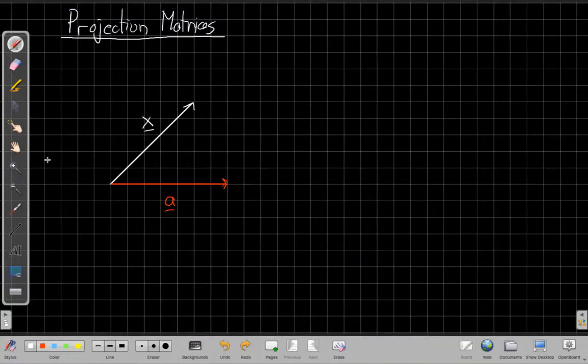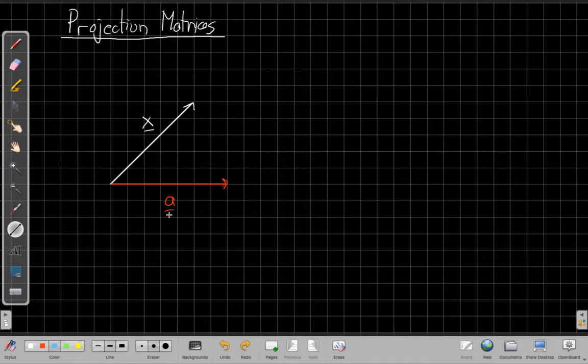Okay, so for projection matrices, the main idea is that we have some vector x we're interested in, and we're going to want to decompose it into the sum of two orthogonal components. One of those components will be parallel to some other vector a.